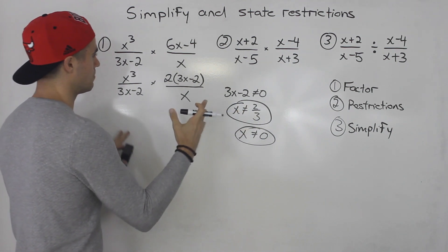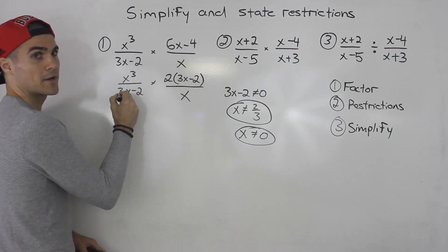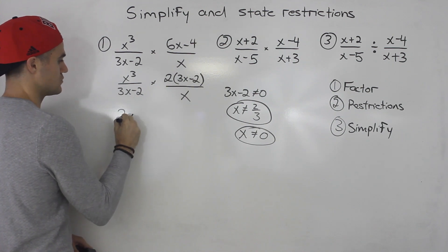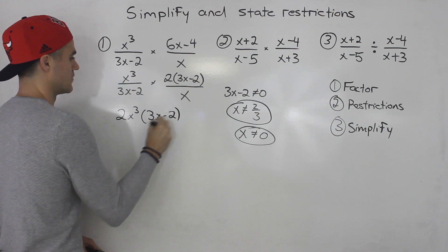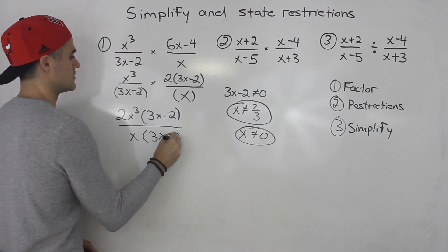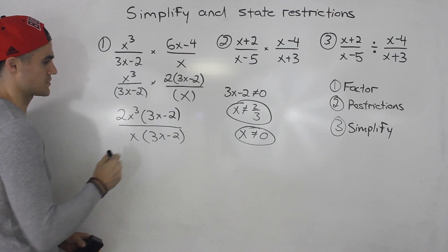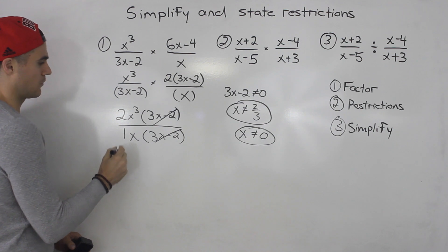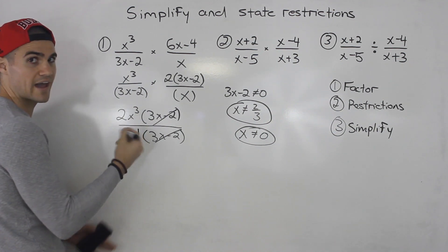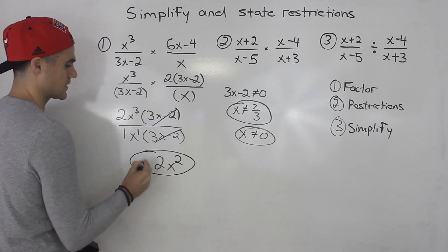Once you've got your restrictions, you simplify. When you're multiplying, I like to combine all the numerators and all the denominators. So x cubed multiplied by 2(3x minus 2) gives 2x cubed times (3x minus 2), all over (3x minus 2) times x. The (3x minus 2) factors cancel out. The 2 stays on top, and x cubed divided by x gives x squared by subtracting exponents. The final answer is 2x squared.